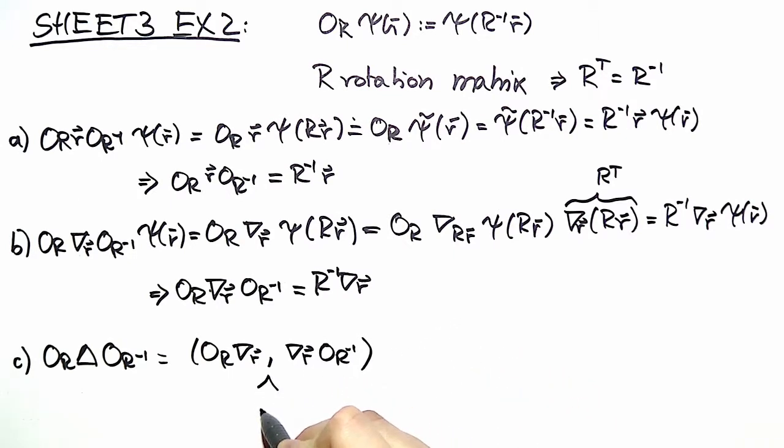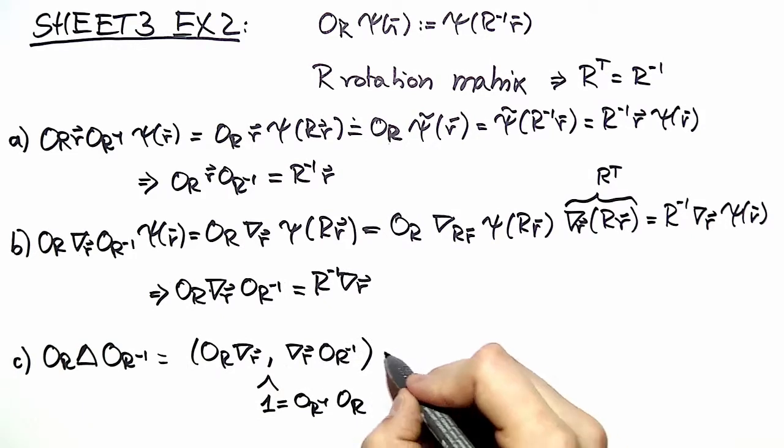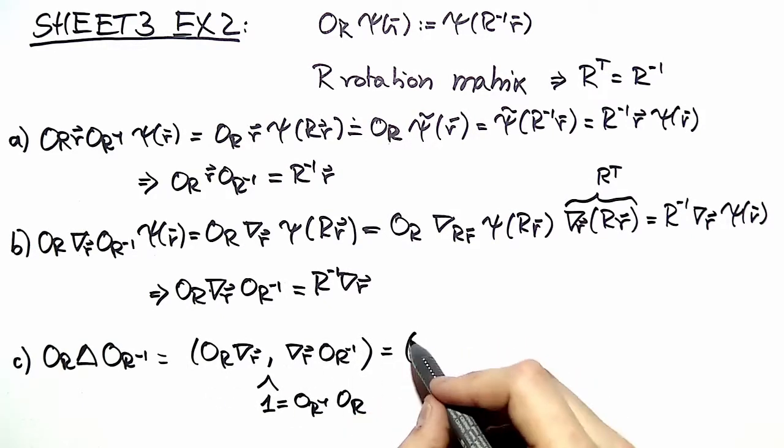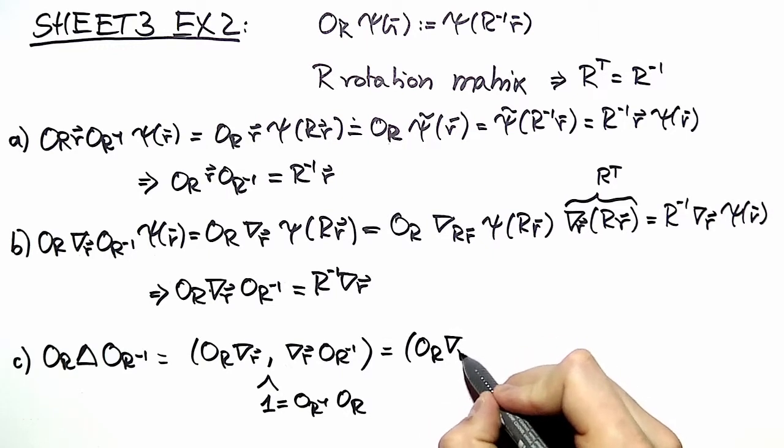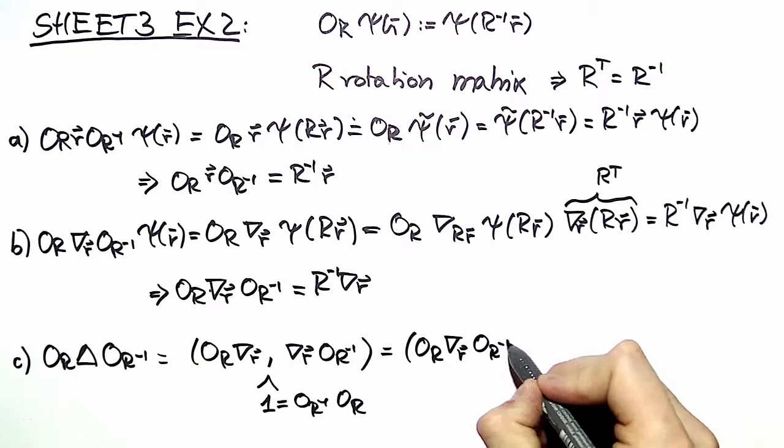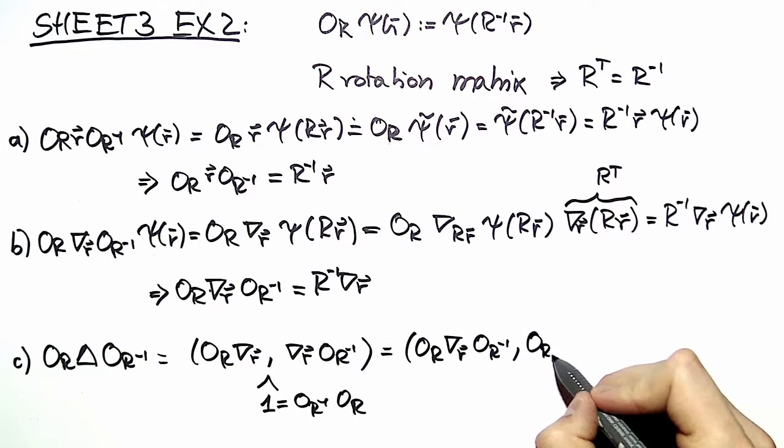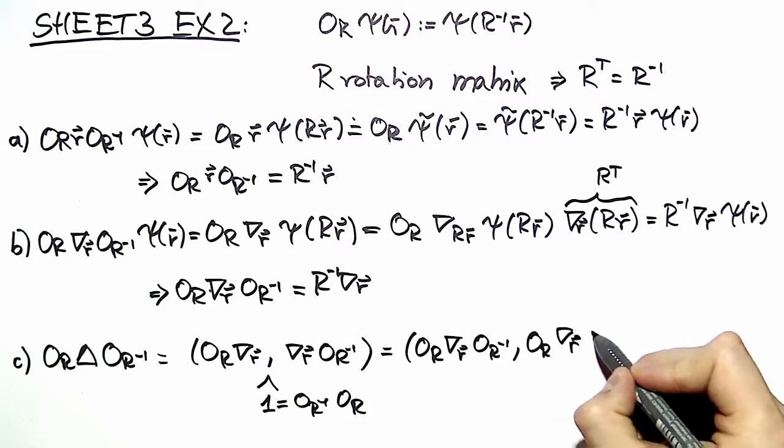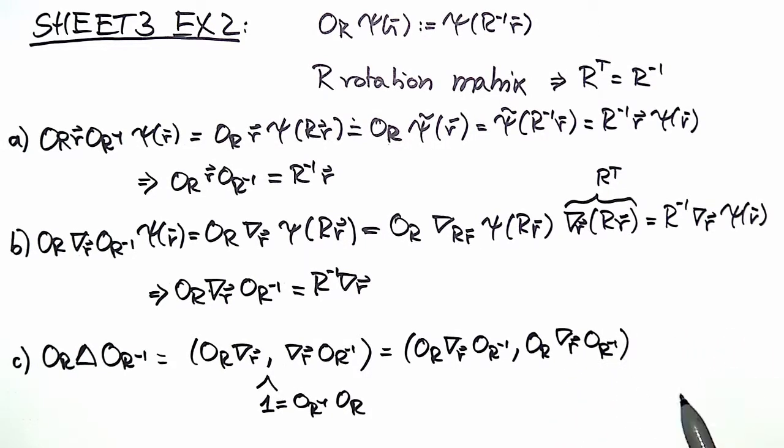Now into this multiplication we insert a 1. A 1 being namely a rotation forward and then backward again. Then this expression looks just like what we know from part B. And we can insert what we've computed already.